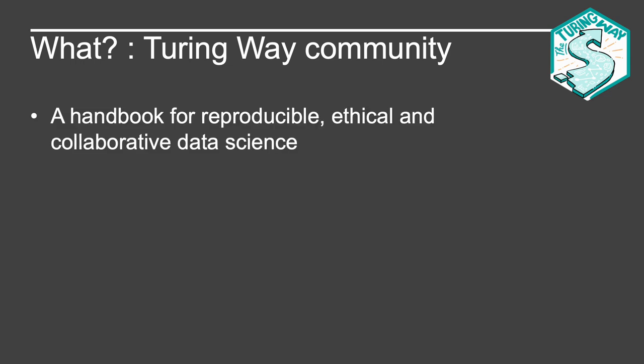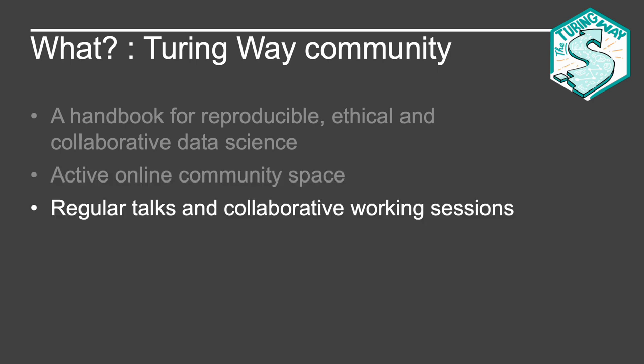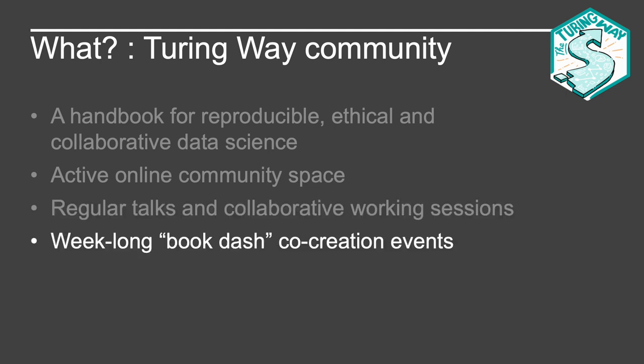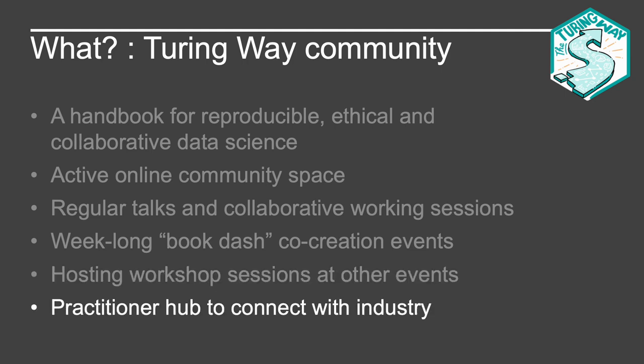The community provides a welcoming environment for shared learning and being welcomed as part of it is a key value. The community is explicit about supporting members to grow from consumer to contributor to community leader. In practice the big output is the handbook for reproducible, ethical and collaborative data science, which has expanded beyond its initial focus on reproducibility to be just one of five chapters. It has a really active online space and runs regular talks and collaborative working sessions. It does week-long book dashes where people come together for deep work. It takes its philosophy of 'curate rather than compete' to how it organises itself, hosting workshops at events other communities hold — and more recently doing this in a structured way with industry as part of a practitioner hub inside the Turing's Bridge AI initiative.